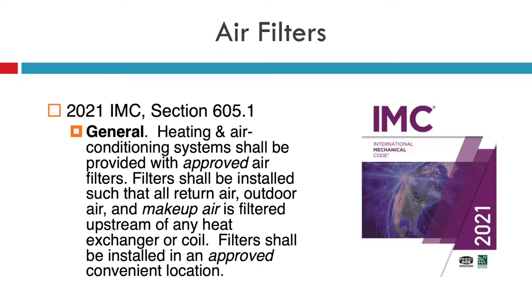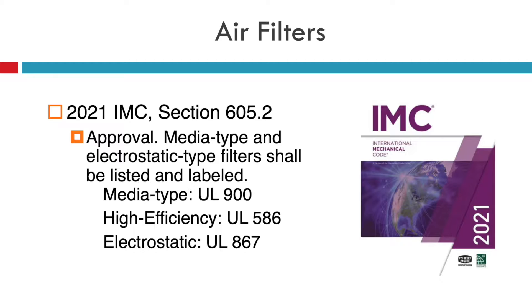Filters shall be installed in an approved, convenient location. Regarding approval of filters in Section 605, media type and electrostatic type filters shall be listed and labeled. If they're media type, they need to meet UL900. High efficiency filters need to meet UL586, and electrostatic filters need to meet UL867.